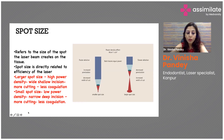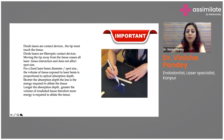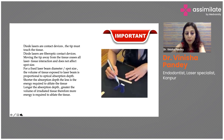Diode lasers are fiber optic contact devices. Moving the tip away from the tissue ceases all laser-tissue interaction and does not affect the spot size. For a fixed laser beam diameter, the volume of tissue exposed is proportional to the optical absorption depth. A shorter absorption depth means less energy is required to cut or ablate tissue; a longer absorption depth means a greater volume is irradiated and more energy is required.